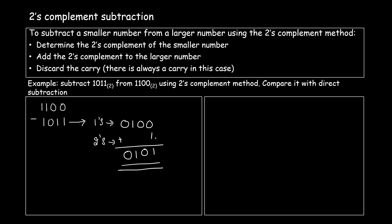Once you find the 2's complement of the smaller number, you add it to the larger number. So I add 1100 with the 2's complement obtained, which is 0101.